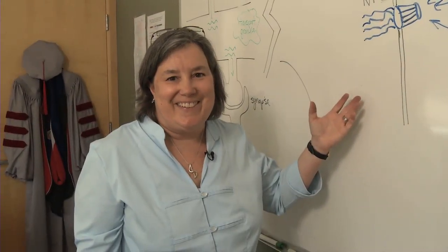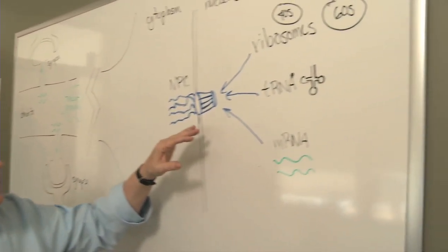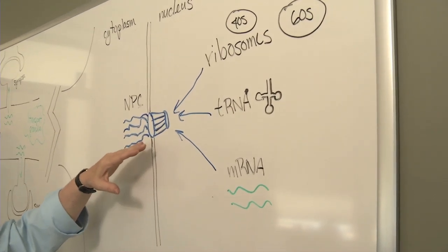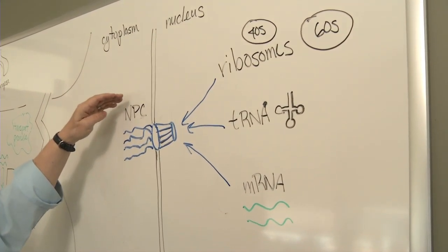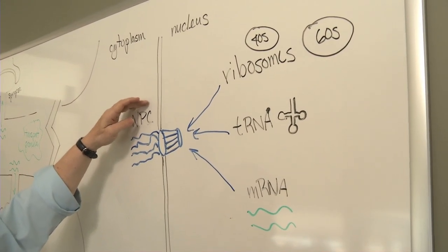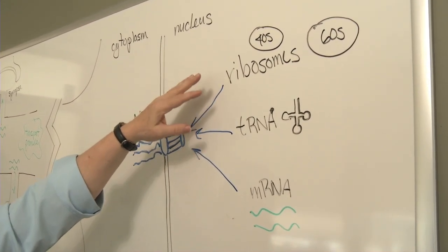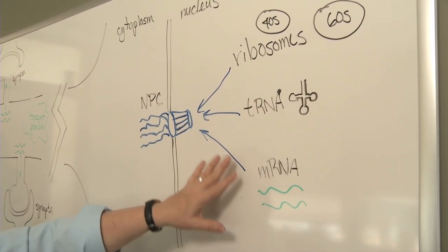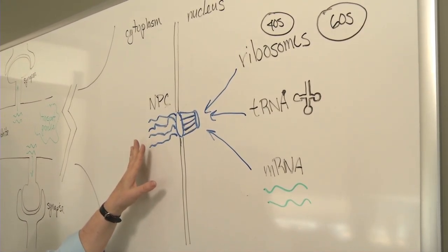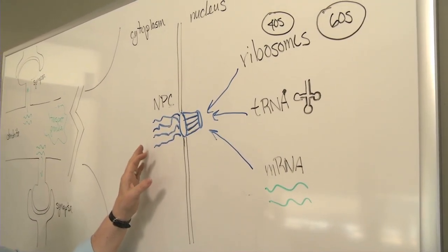An essential process in all eukaryotic cells is the export of materials from the nucleus to the cytoplasm. Up to now, this has been thought to occur solely via the nuclear pore complex. Thus, ribosomes, tRNAs, and mRNAs are all thought to exit the nucleus via the nuclear pore complex.